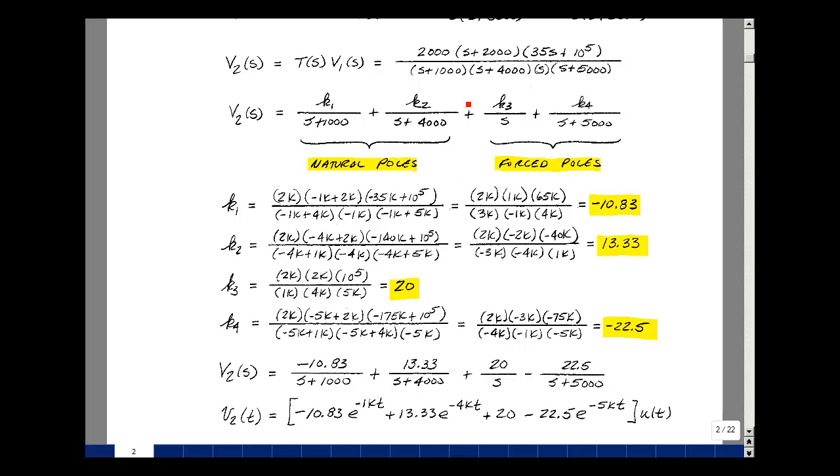And lastly for k4, multiply this expression by s plus 5,000 and let s equal minus 5,000. So we have 2,000 times (minus 5,000 plus 2,000) times (35 times minus 5,000, which is minus 175,000, plus 100,000) divided by (minus 5,000 plus 1,000)(minus 5,000 plus 4,000)(minus 5,000). That gives us 2,000 times minus 3,000 times minus 75,000 divided by minus 4,000 times minus 1,000 times minus 5,000. That turns out to be minus 22.5.